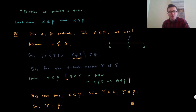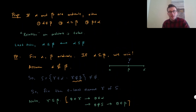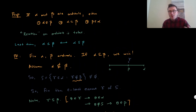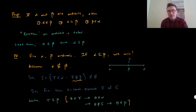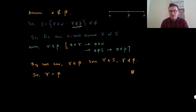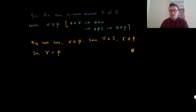So what did we just argue? We argued that the relation on the ordinals is total: if you have any two ordinals, either one is less than the other, or vice versa. The picture of the ordinals is a really long line.